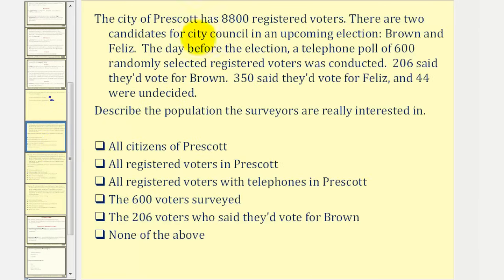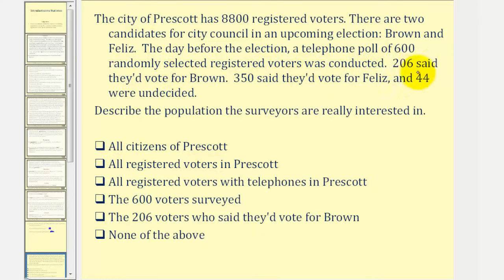Now for the next three questions, the situation will be the same but the question will change. The city of Prescott has 8,800 registered voters. There are two candidates for city council in an upcoming election: Brown and Felice. The day before the election, a telephone poll of 600 randomly selected registered voters was conducted. 206 said they'd vote for Brown, 350 said they'd vote for Felice, and 44 were undecided.